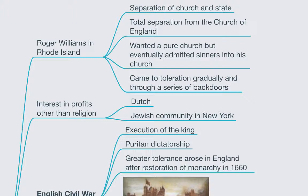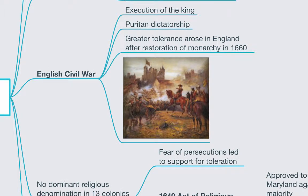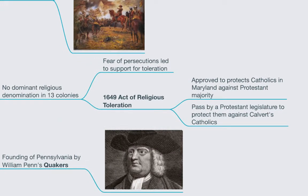Toleration also resulted from settlers more interested in profits than religion, particularly the Dutch in New Amsterdam. In the mid-1650s, these settlers even allowed the first Jewish community in what would eventually become New York. Another partial explanation for the development of toleration can be found in the negative example of the English Civil Wars during the 1640s, followed by the execution of the English king and the establishment of a Puritan dictatorship under Oliver Cromwell — this experience illustrated where both religious and political conflict could lead. Greater tolerance arose in England after the restoration of the monarchy in 1660. It's also true that no one Christian denomination was dominant in all 13 colonies, which led many groups who feared persecution by others to support toleration as a means of protecting themselves.